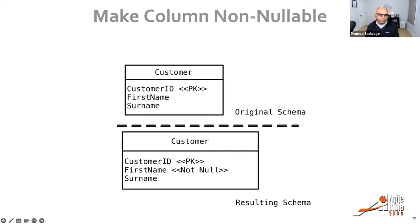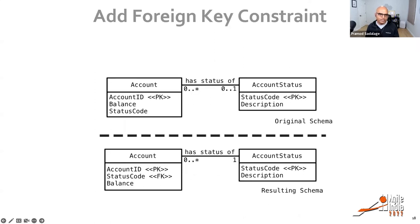Even making a column non-nullable is a refactoring — you're improving data quality by saying at least the first name should be not null. You don't want a customer with no first name or last name in your database. Similarly, quality-wise, you might add a foreign key constraint: account status has to exist on the account, you cannot have an account without account status. That's a quality-based constraint refactoring.